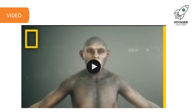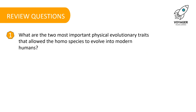We're going to watch a video now about the emergence of human species from Africa. There is a review question: What are the two most important physical evolutionary traits that allowed the Homo species to evolve into modern humans? If you like, pause the video now and write down that question in your notebook so you can think about it as you're watching.